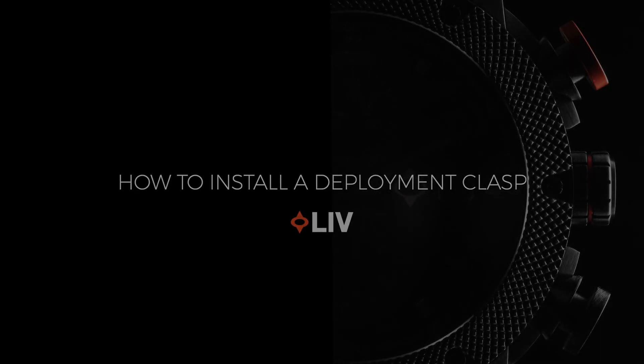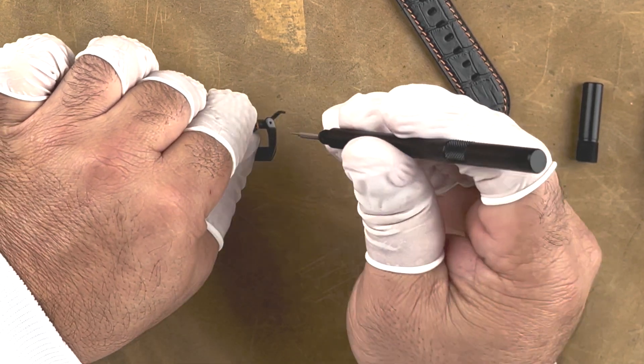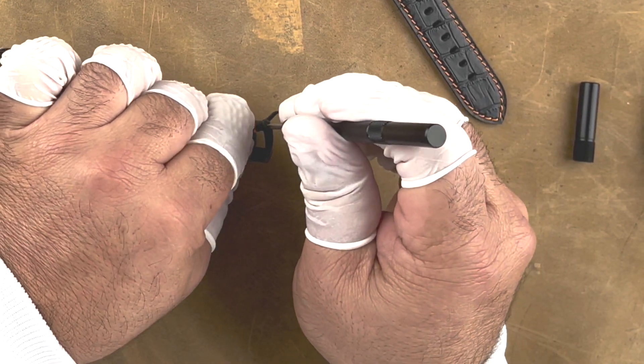How to install a deployant clasp on your leather strap. Use a pin to push the spring bar through the drilled hole on the side of the buckle.